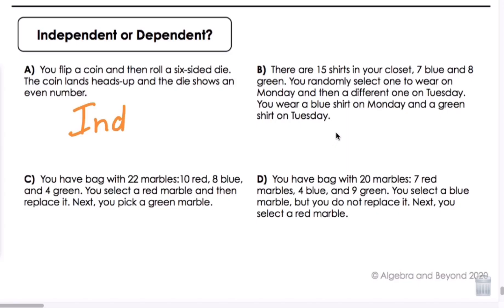Letter B. There are 15 shirts in your closet, seven blue and eight green. You randomly select one to wear on Monday and then a different one on Tuesday. You wear a blue shirt on Monday and a green shirt on Tuesday. These are going to be dependent, assuming you didn't do your laundry, because once you wear the one shirt, you're not going to wear it again.